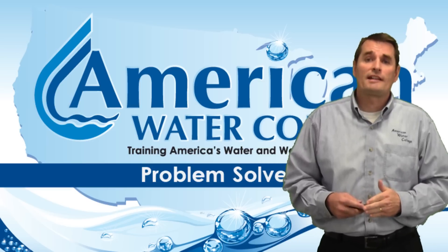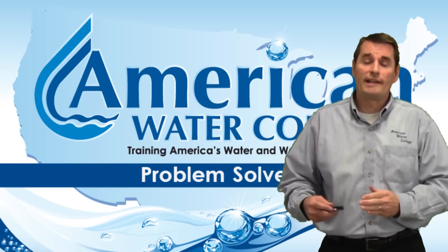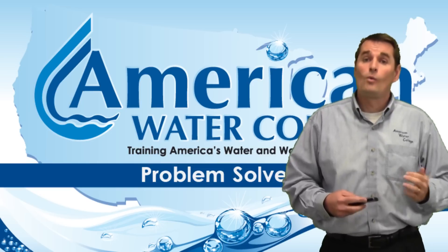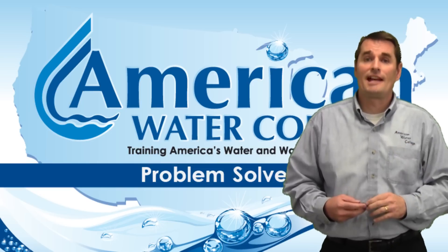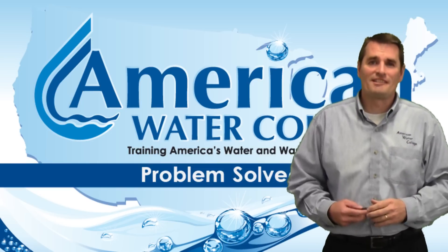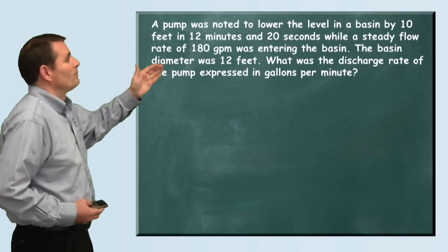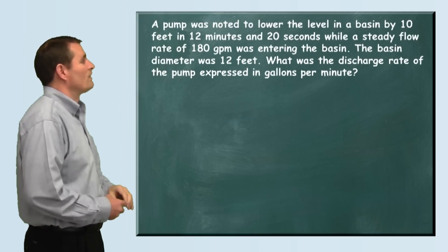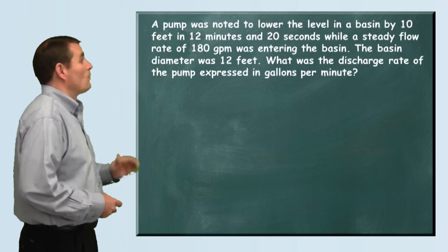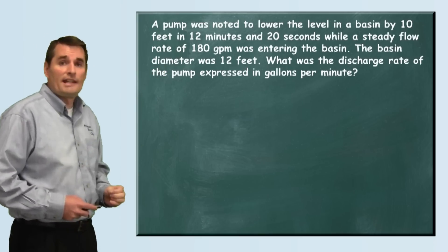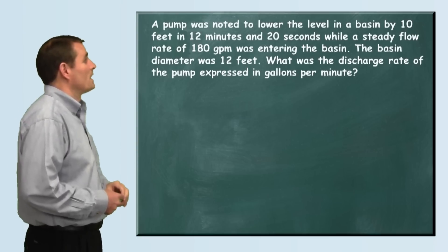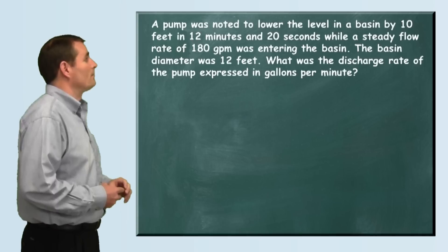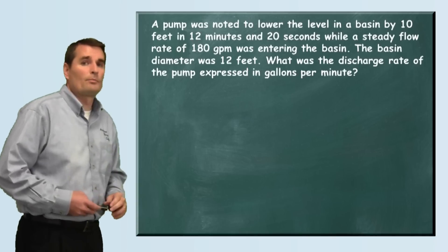In this problem we're going to learn how to calculate pump flow rate based on the rate at which a circular tank drops in level while we have flow coming into that tank. A pump was noted to lower the level in a basin by 10 feet in 12 minutes and 20 seconds while a steady flow rate of 180 gallons per minute was entering the basin. The basin diameter was 12 feet. What was the discharge rate of the pump expressed in gallons per minute?